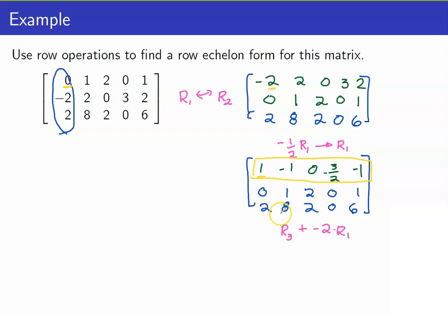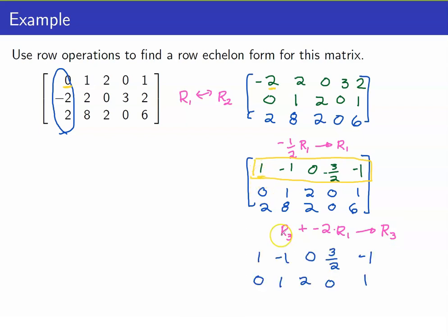We now add R3 to negative 2 times R1 — that will be our new R3. If you are going to use the replacement row operation, take note that you do not multiply any scalar to that row. You simply add a scalar multiple of another row. And which row are you going to make use of? You should always use the row containing the leading entry above it. Hence R3 plus negative 2R1: 2 plus negative 2 is now equal to zero, 8 plus 2 is 10, 2 minus 0 is still 2, and 6 plus 2 is equal to 8.